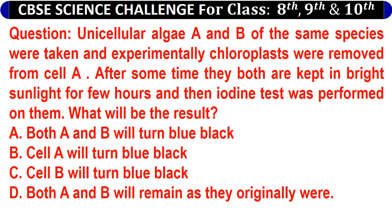Unicellular algae A and B of the same species were taken, and experimentally chloroplasts were removed from cell A. After some time, they both were kept in bright sunlight for a few hours, and then iodine test was performed on them. What will be the result? Option A: Both A and B will turn blue-black. Option B: Cell A will turn blue-black.